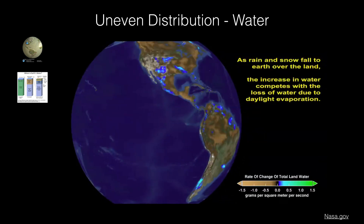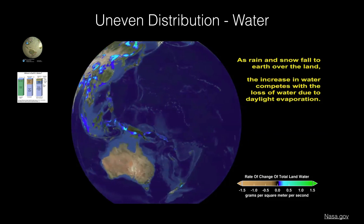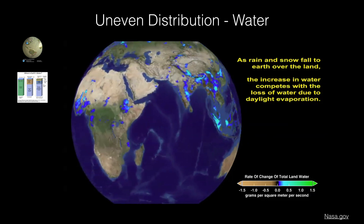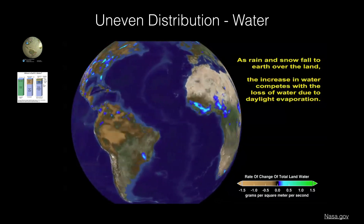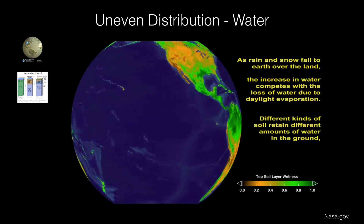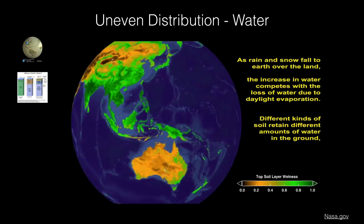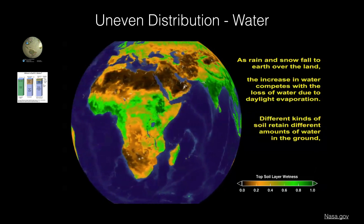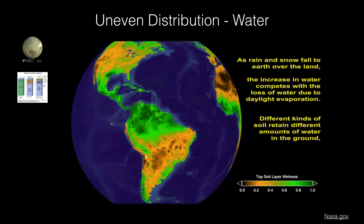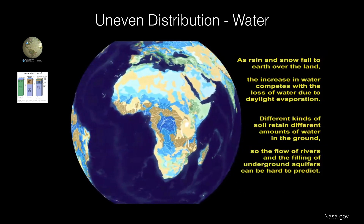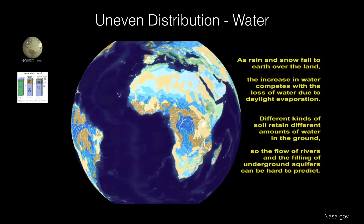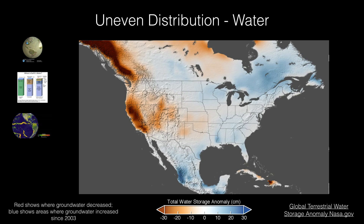In this simulation, you can see rain and precipitation around the globe, showing the rate of change in water as it competes with evaporation on a daily basis. The brown parts don't retain water as well as the green parts because the soil is different — different soils retain different amounts of water. It's actually very difficult to predict exactly how much water is underground or in all rivers and lakes at once, but we can see increases and decreases. This map shows the increase and decrease of groundwater since 2003.